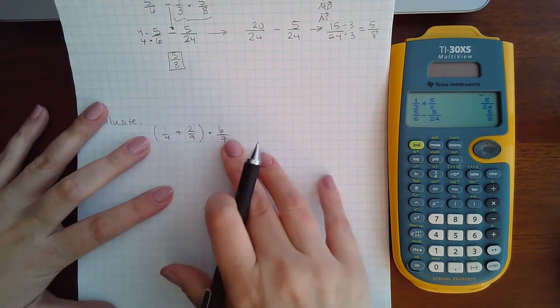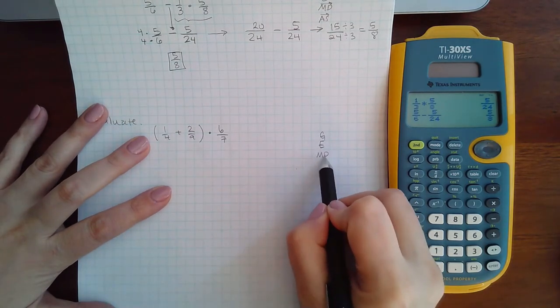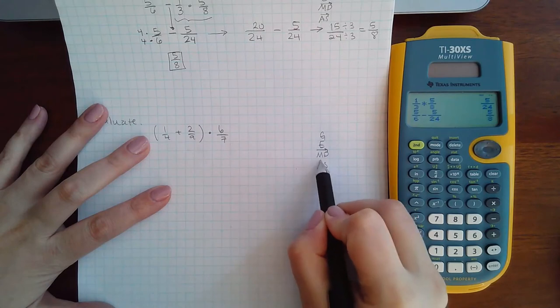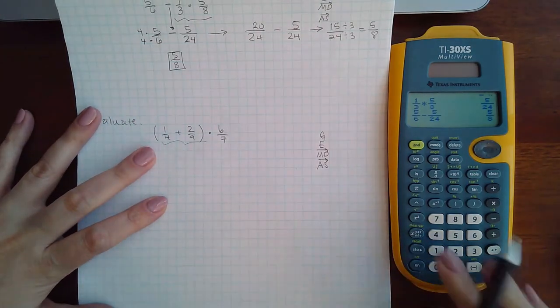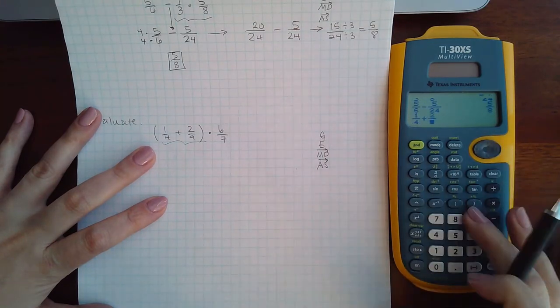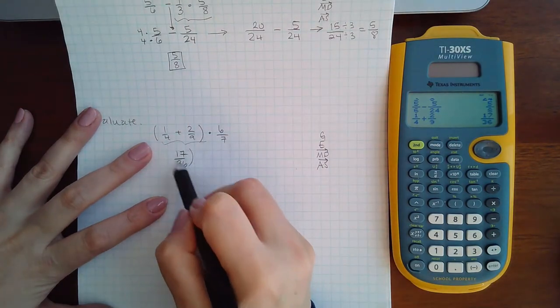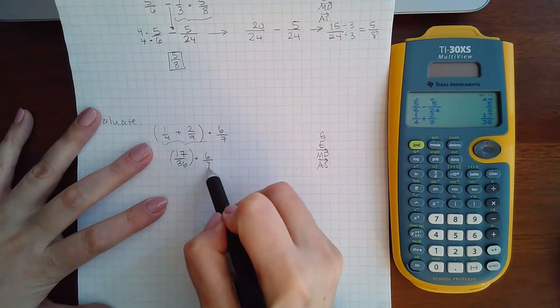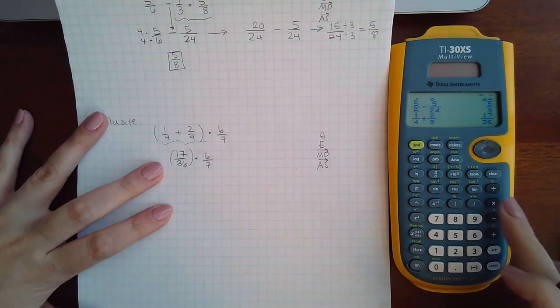So next problem here, I'm going to go through our order of operations. So there is a grouping mechanism, and I do have to do that, and I can do the fraction part in my calculator. It's not against the rules to do that. I get 17 over 36. It does save you some time sometimes as well, especially like on a test, right? And then the last thing to do is multiply.